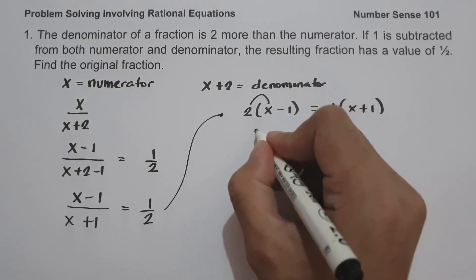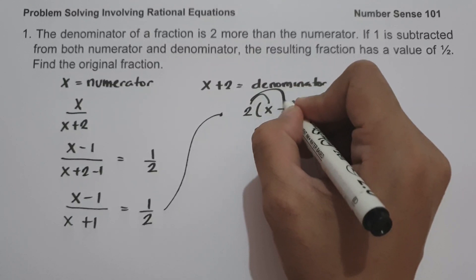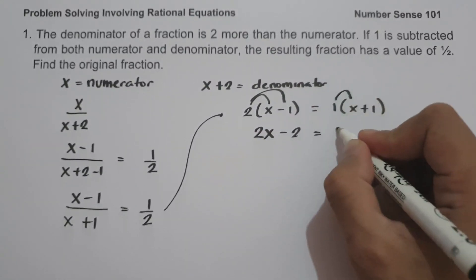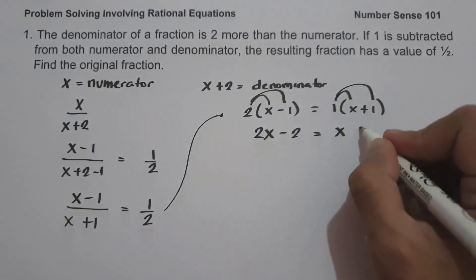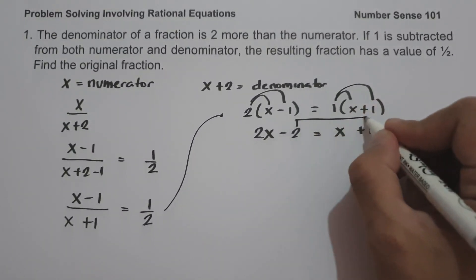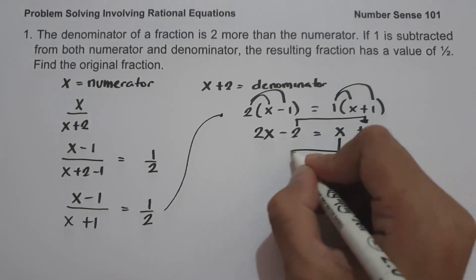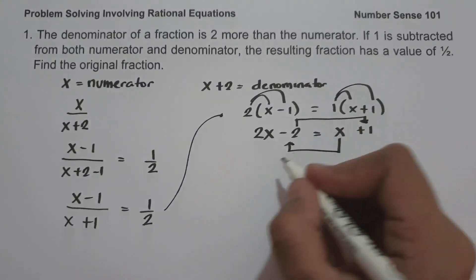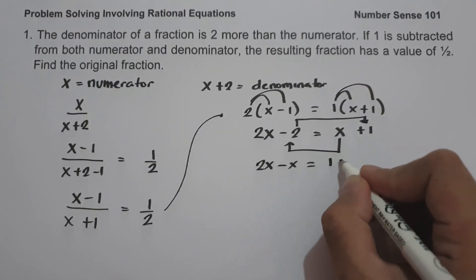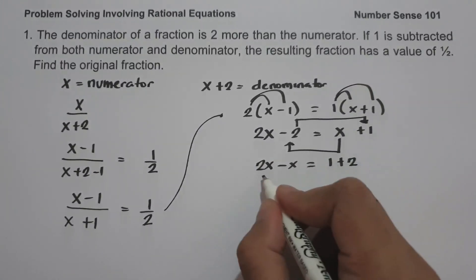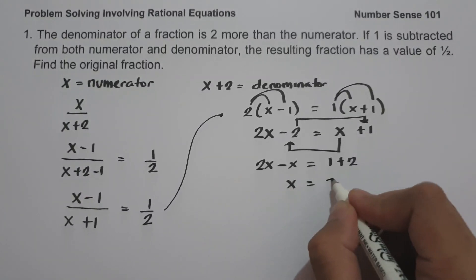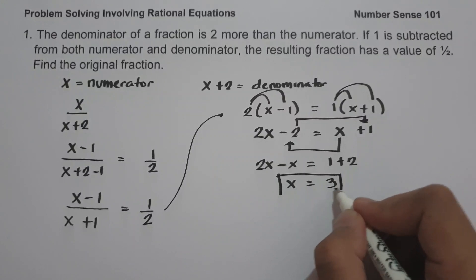Two multiplied by x is two x. Two multiplied by negative one is negative two. One multiplied by x is x, and one times one is one. So let us move negative two to the side of x plus one, and move x to the side of two x minus two. It gives us two x minus x equals one plus two. Two x minus x is x, and one plus two is three.